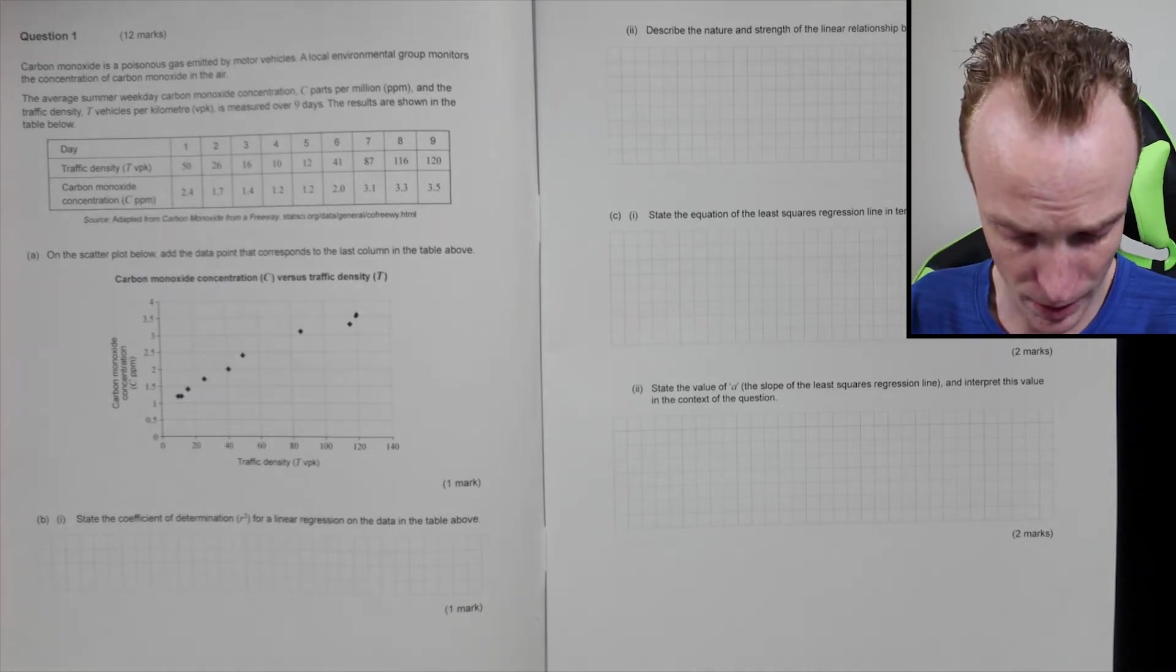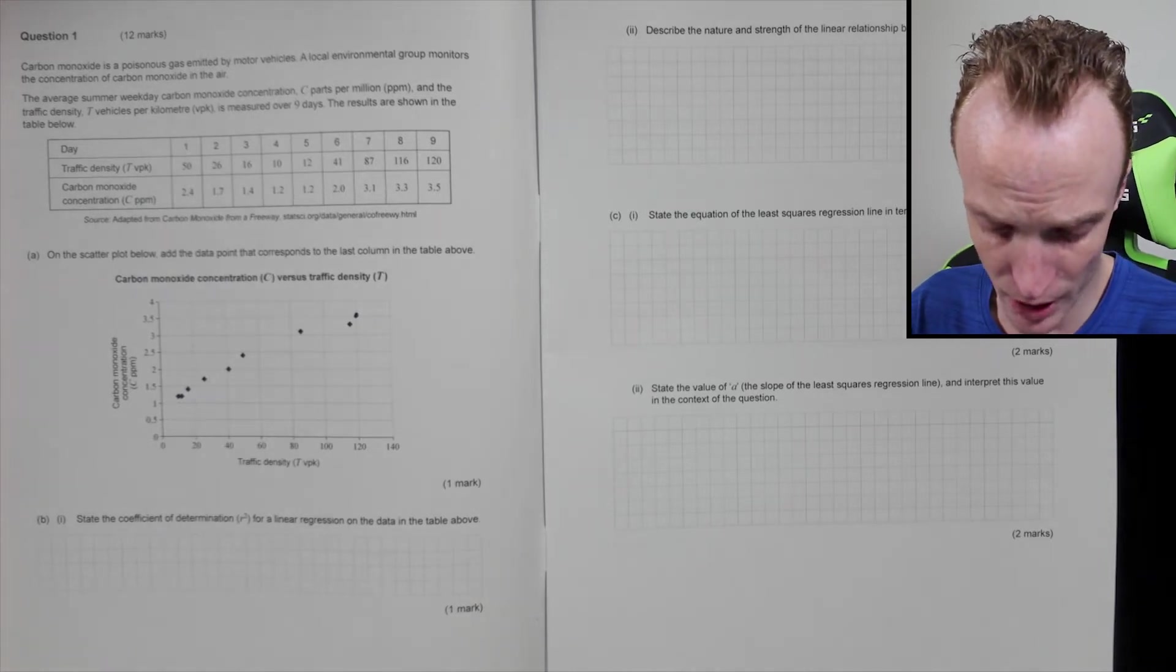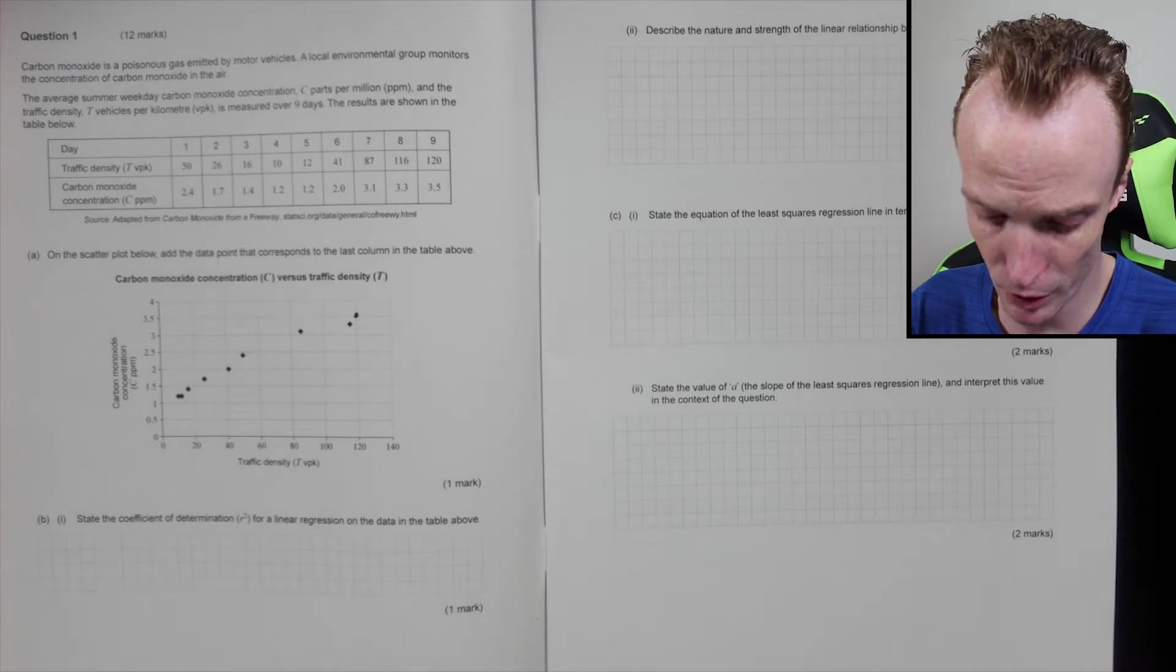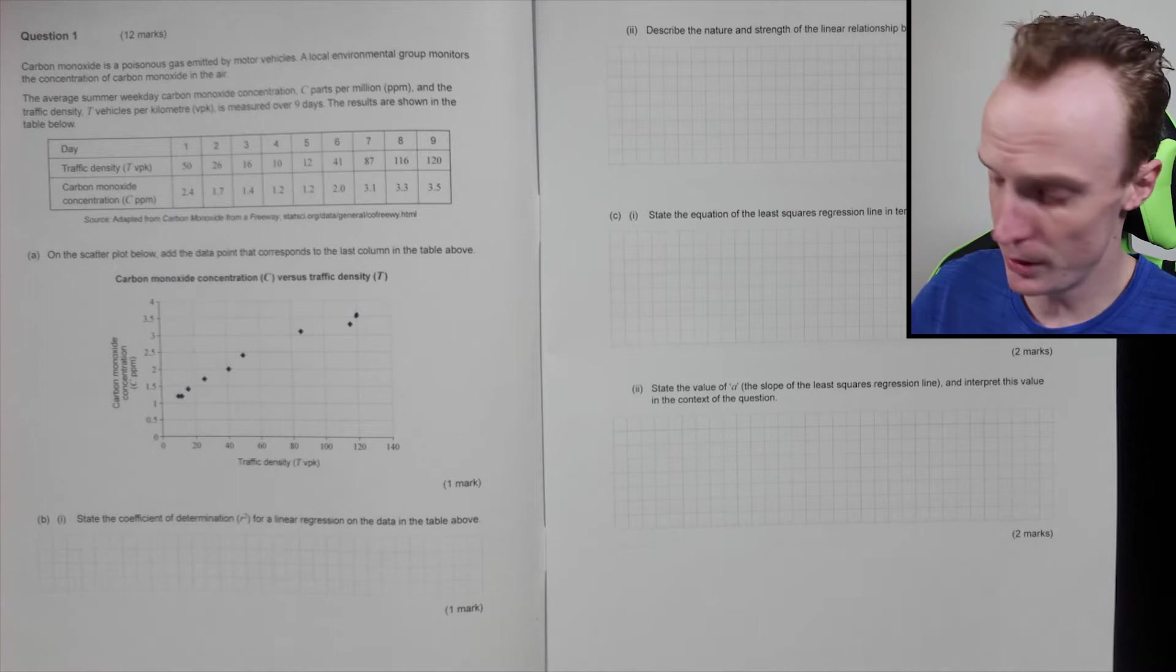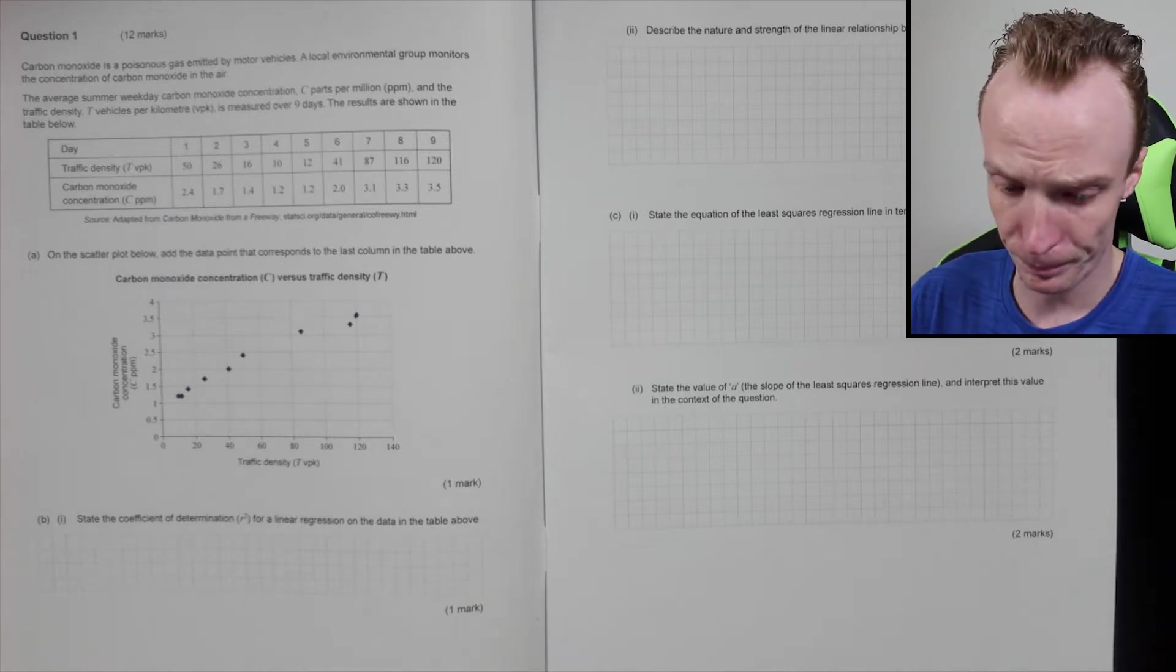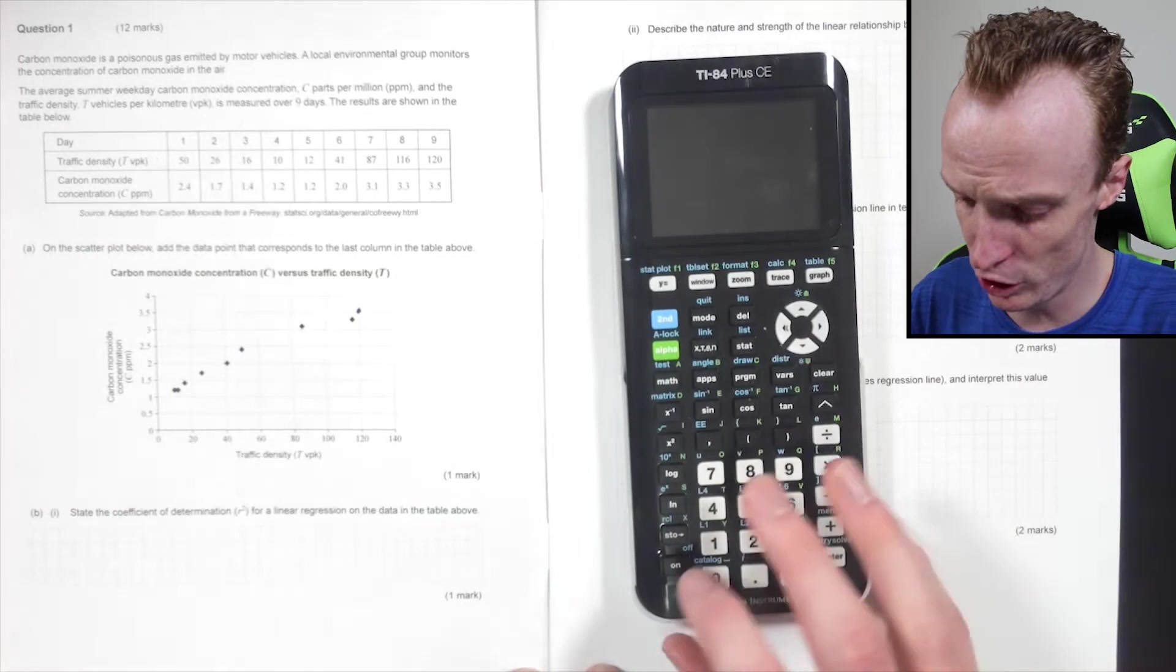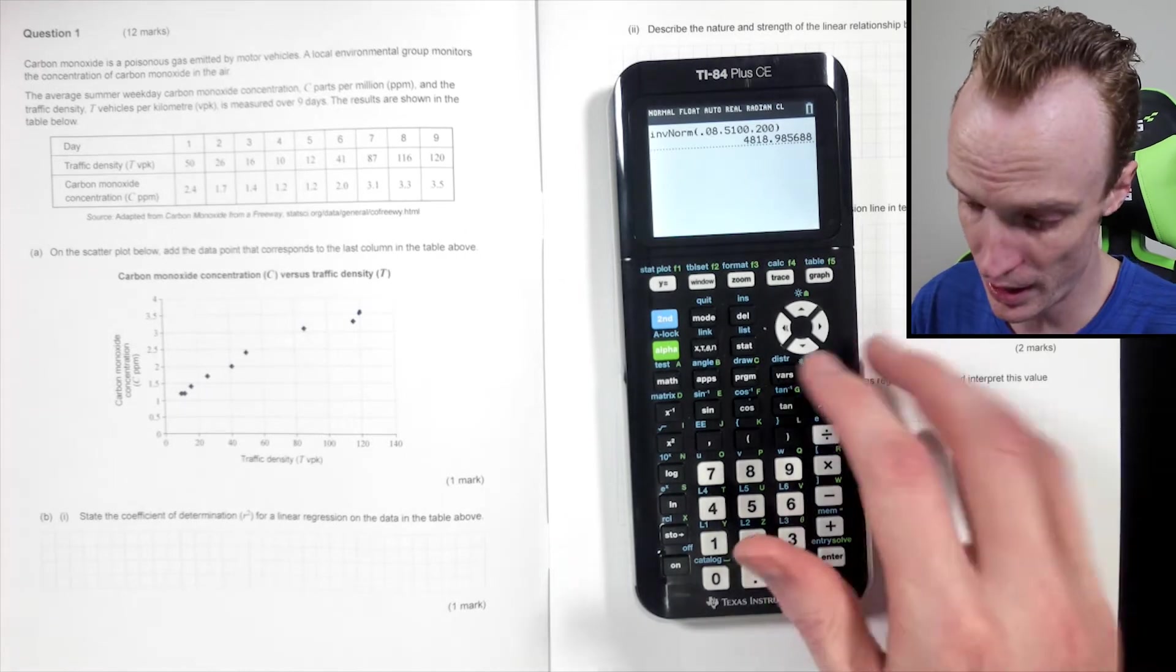All right, now part b: state the coefficient of determination r squared for the linear regression model for the data in the table above. So this is where we need to get the calculator out and initially input all of the data.